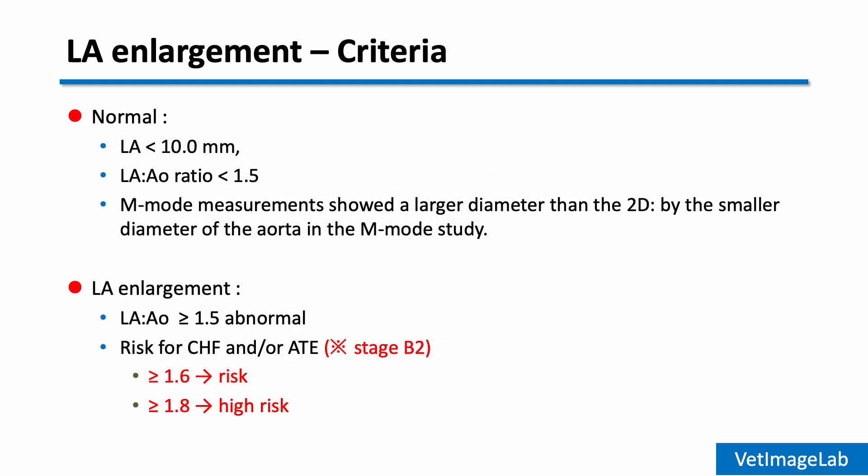In general, normal LA size is less than 10 mm, and the LA to AO ratio should be less than 1.5. When the ratio reaches 1.5 or higher, we consider it abnormal, indicating left atrial enlargement.